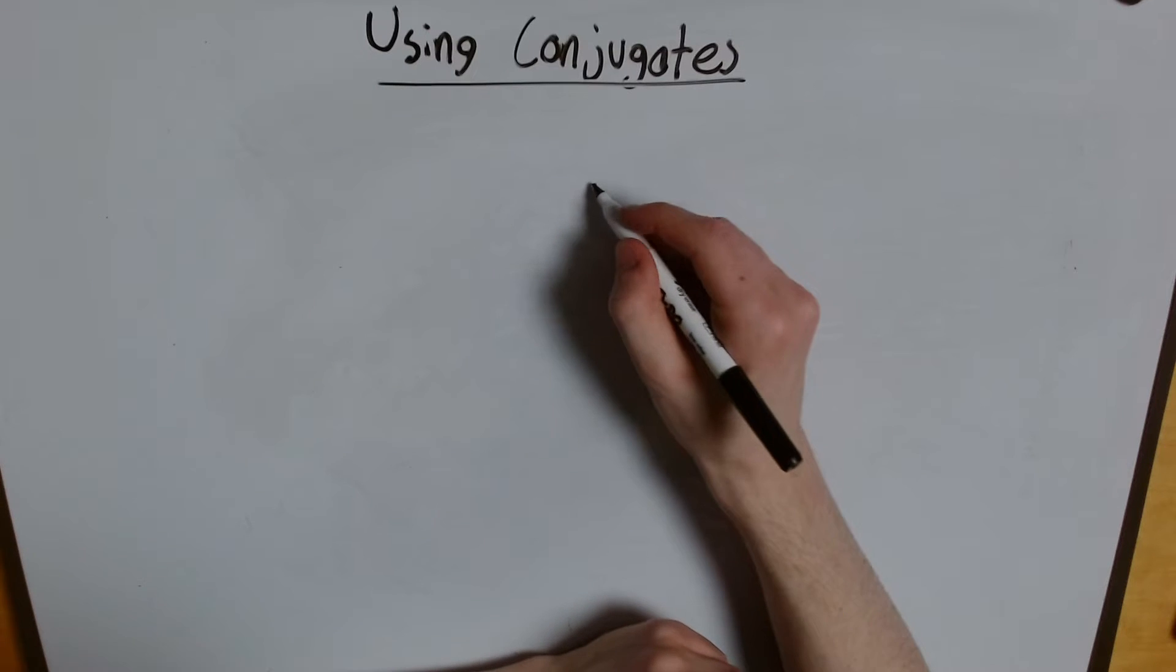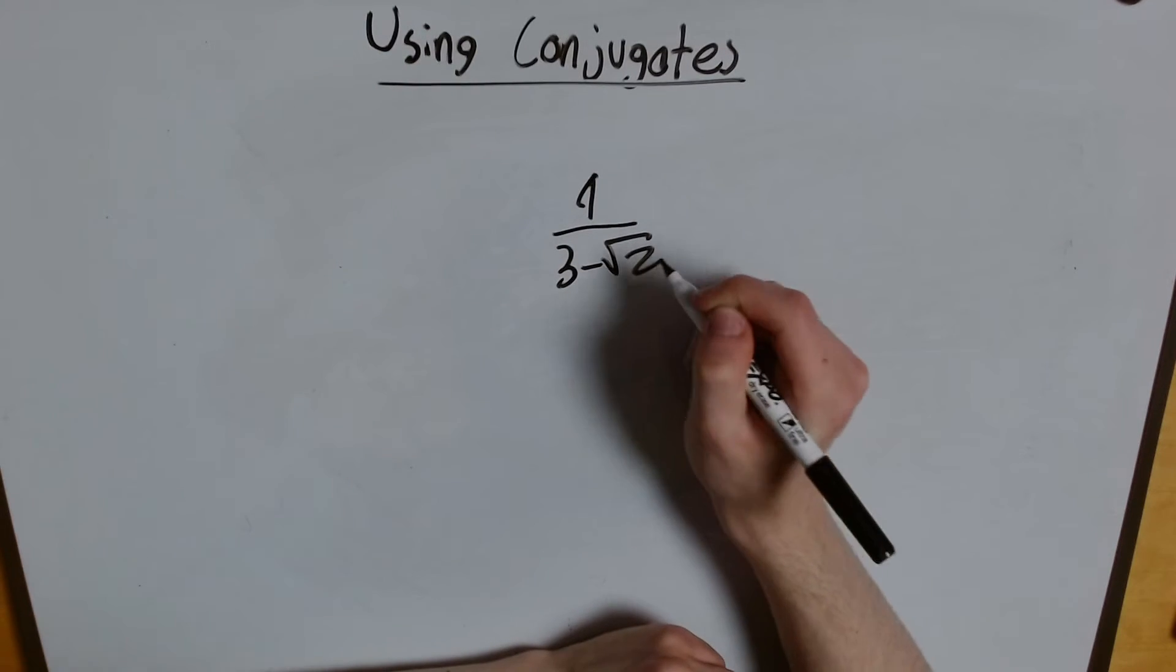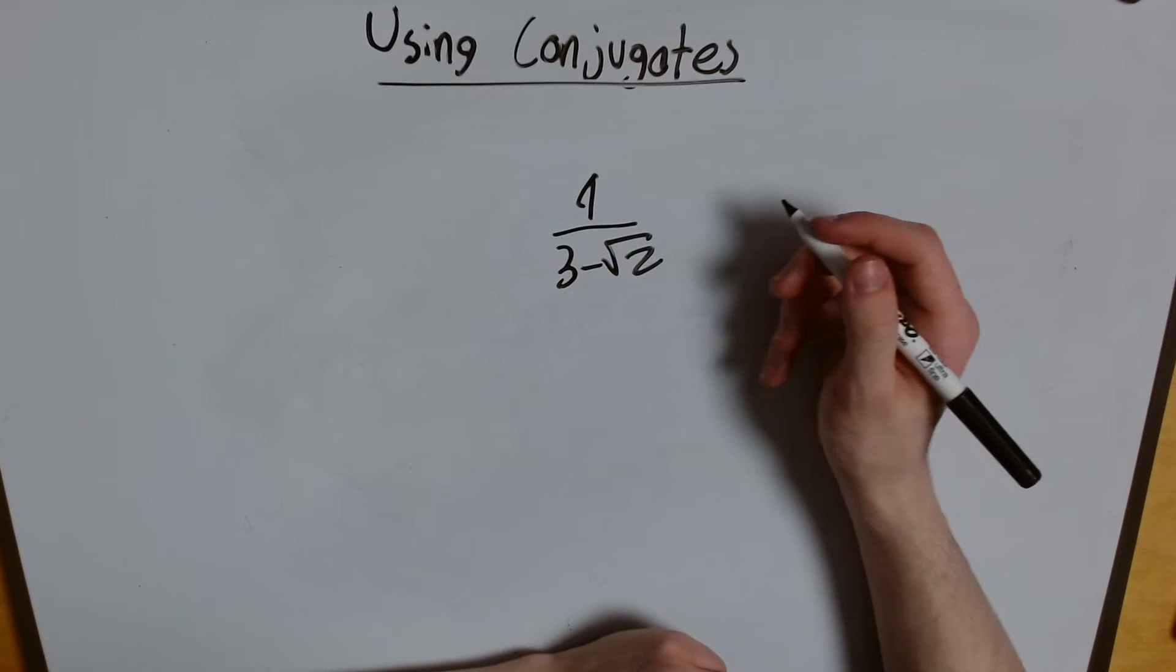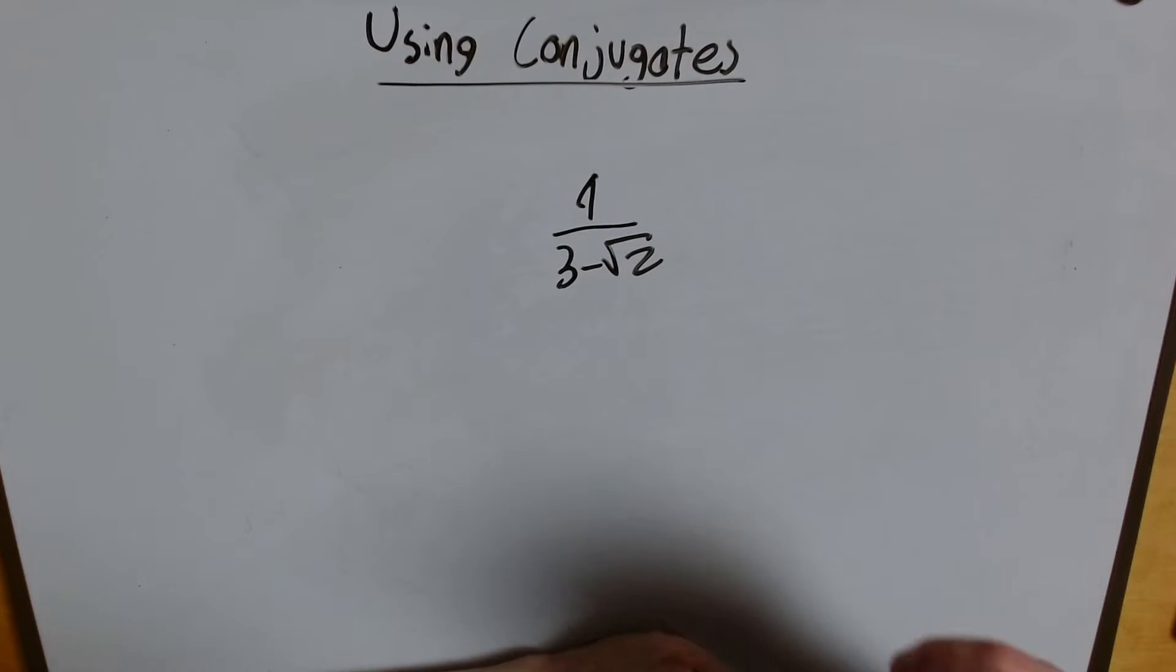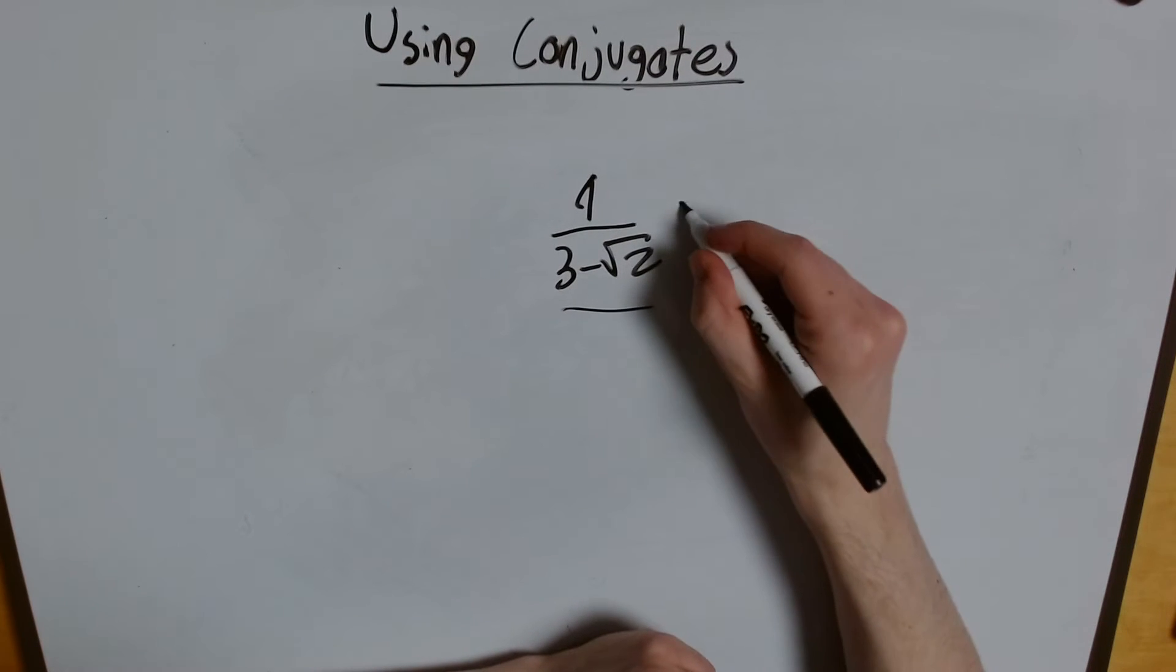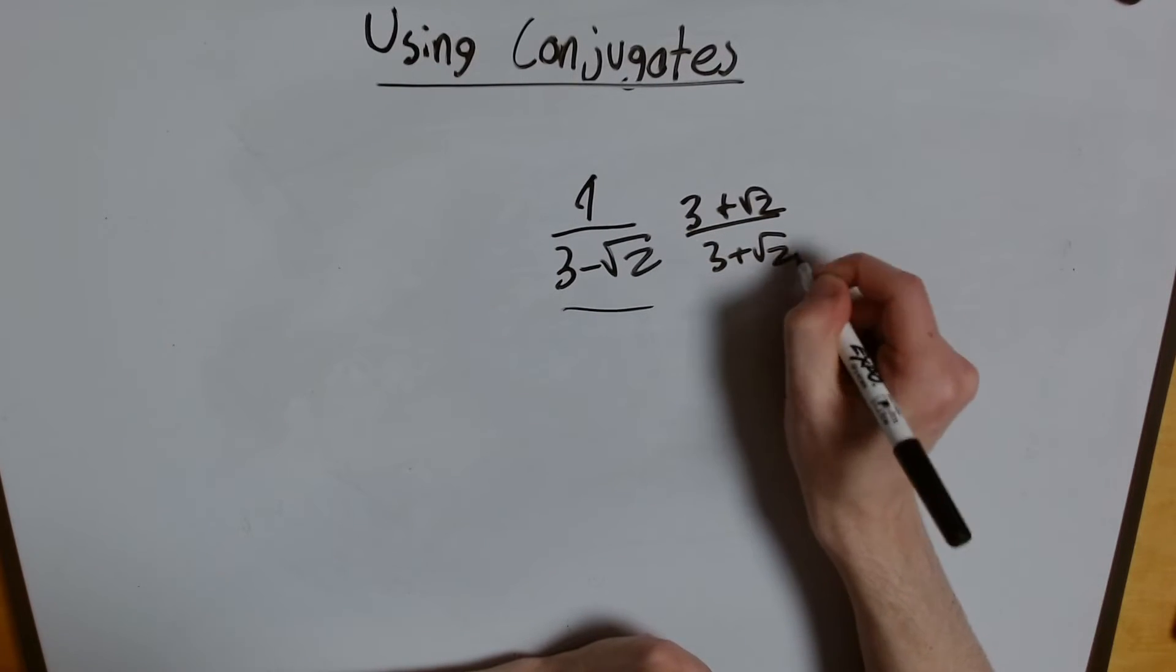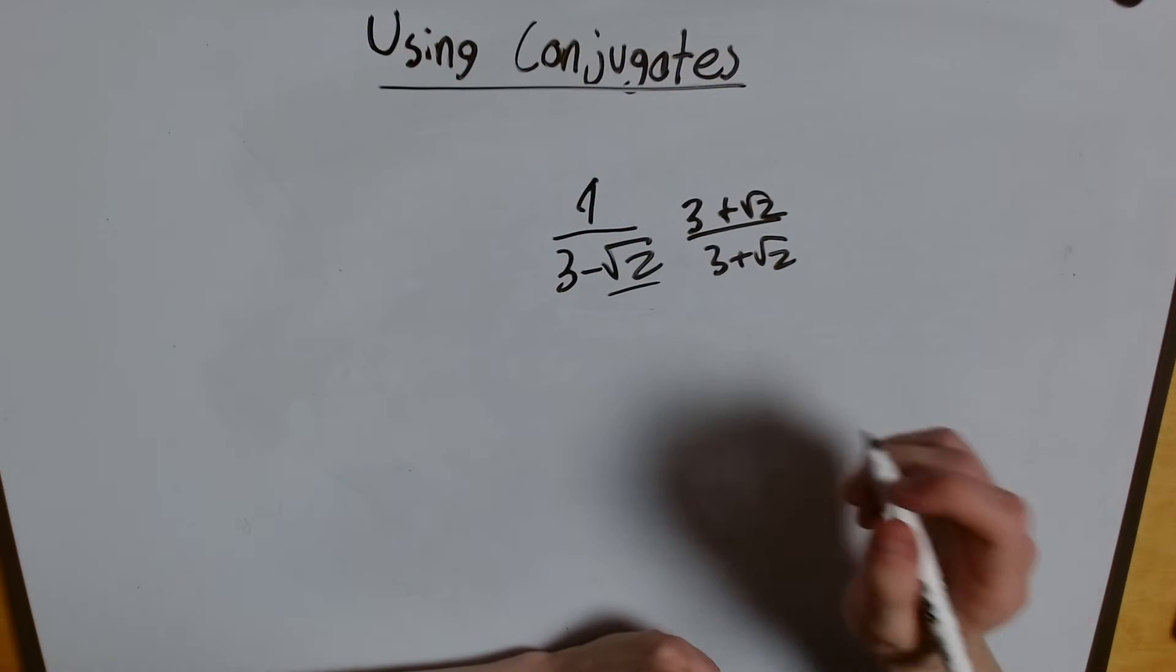So say we were given something like this, 1 over 3 minus the square root of 2, and we were asked to rationalize the denominator. Well, we do that by using conjugates. If we multiply the top and the bottom by the conjugate of this, in this case, 3 plus the square root of 2, we'll get rid of this square root, this irrational number.